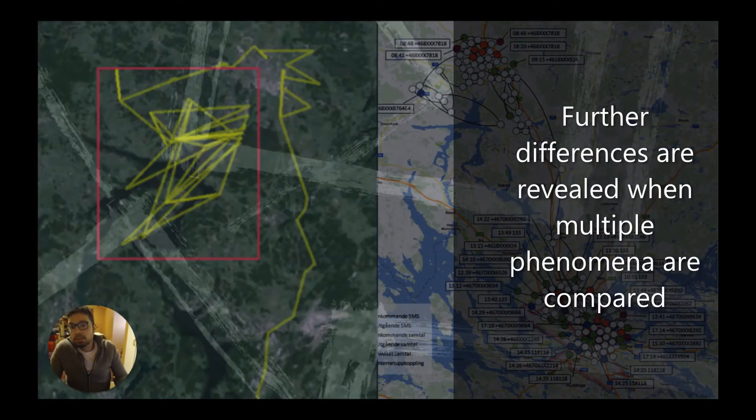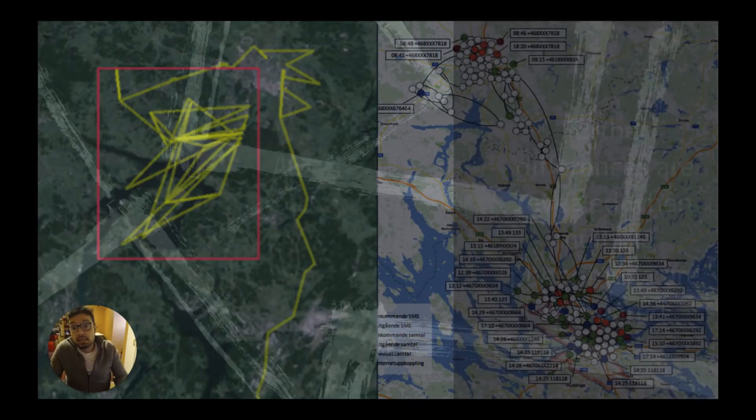These notes were compared with the network logs, letting the researchers examine the differences and discrepancies between the two streams of data and between people. One researcher, living in a remote area, barely registered movement in the network logs, while another, living in a city, could register movement inside his home.